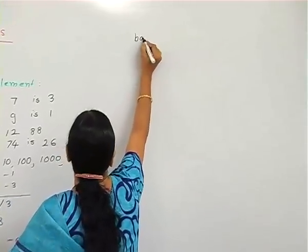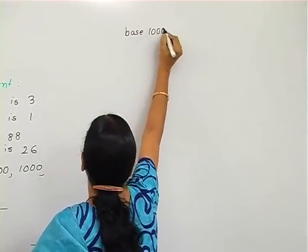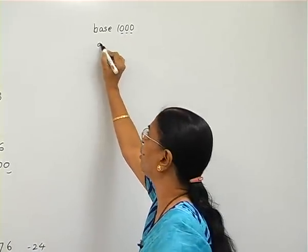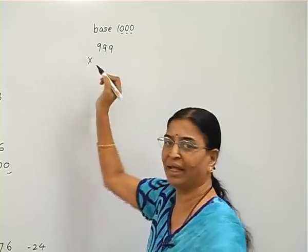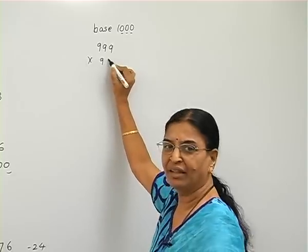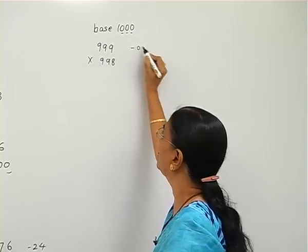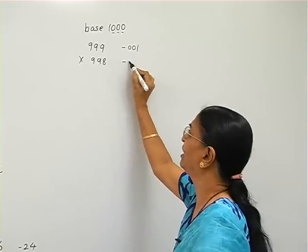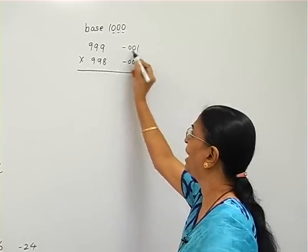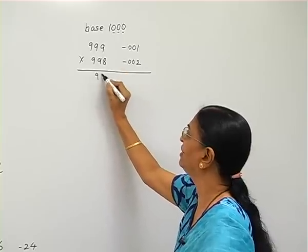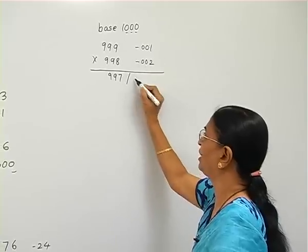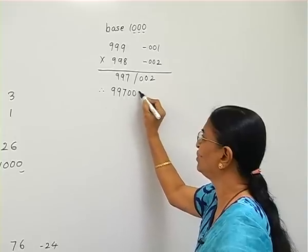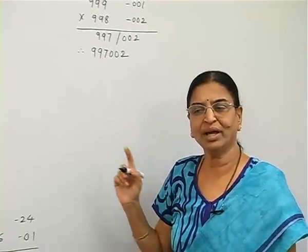Now for base 1000: there are three zeros, so there will be three digits in the complement. Suppose we want to multiply 999 by 998. This gives minus 001 and minus 002 — three digits each. By cross subtraction we get 997, and the product is 002, so the answer is 997002.